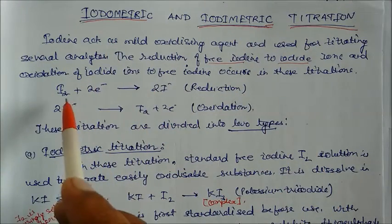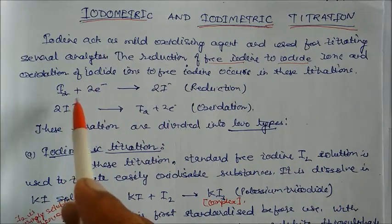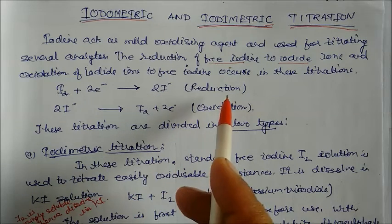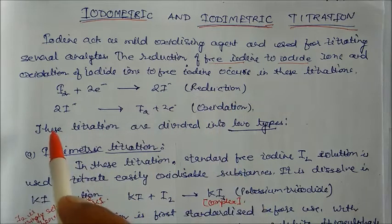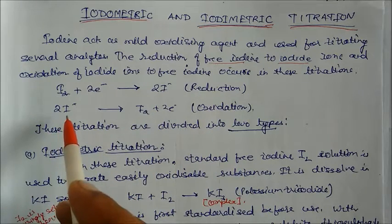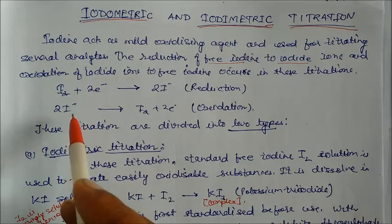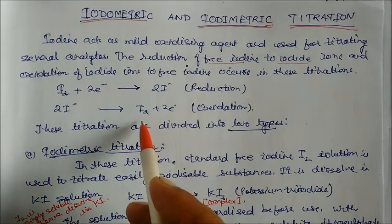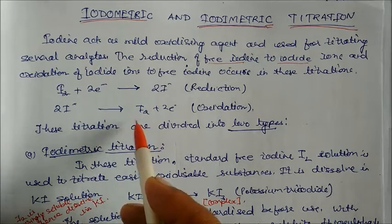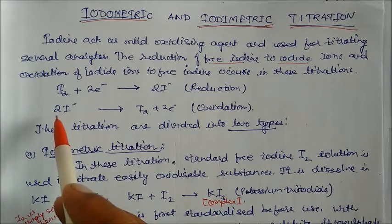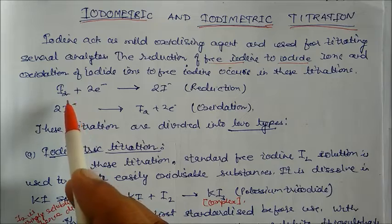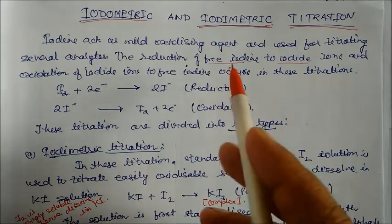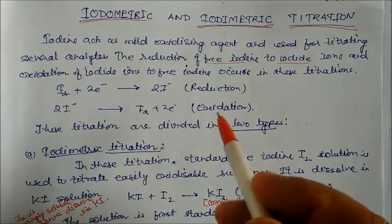Iodine takes two electrons and converts into two I⁻ — this is the reduction reaction. During oxidation, the two I⁻ loses electrons and converts back to iodine. So these two phenomena — oxidation of iodide and reduction of iodine — are studied in these titrations.